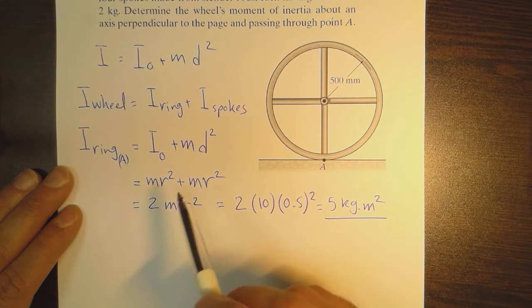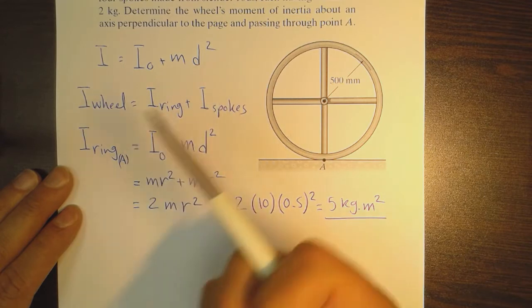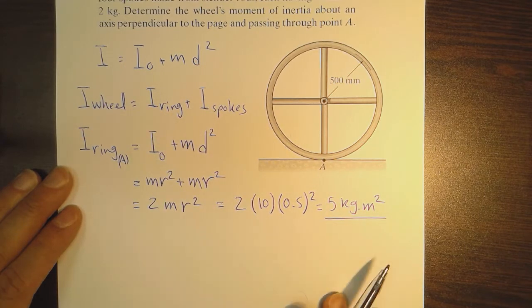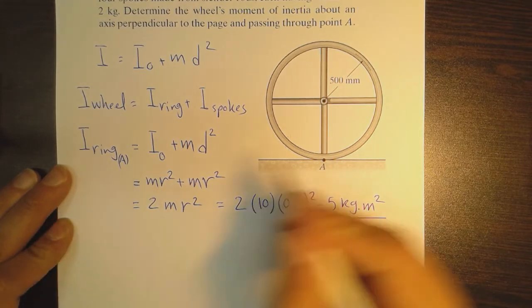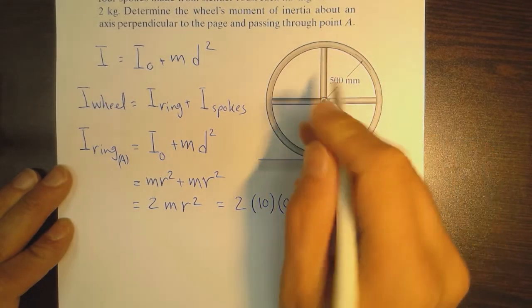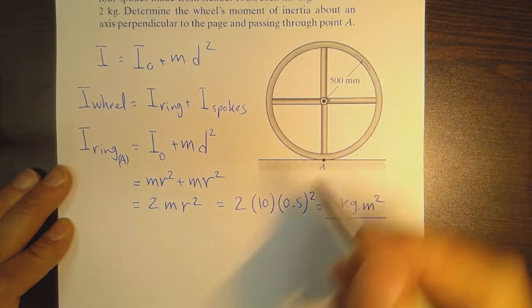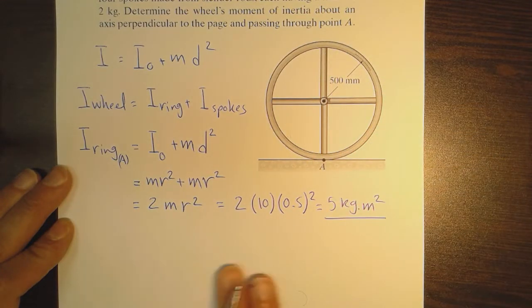This would ease the calculations. So we would consider that we have only two rods, each one meter long.